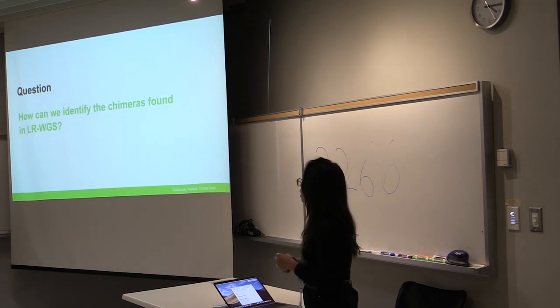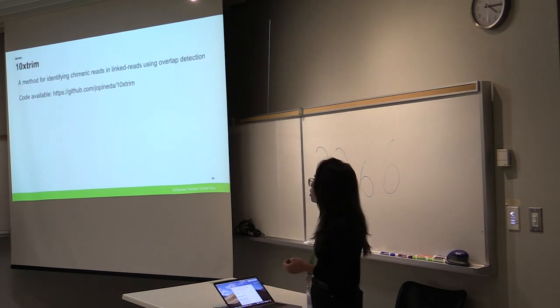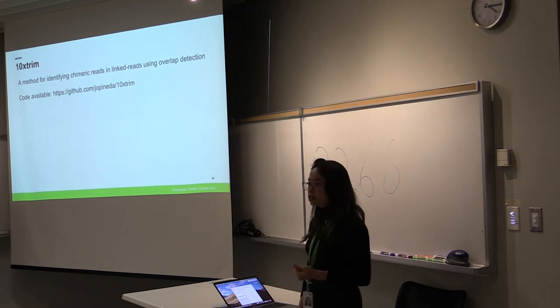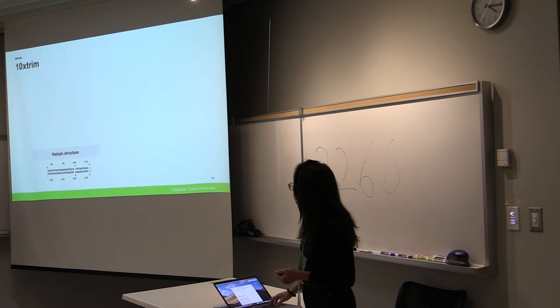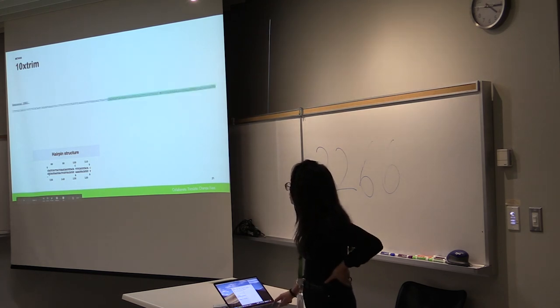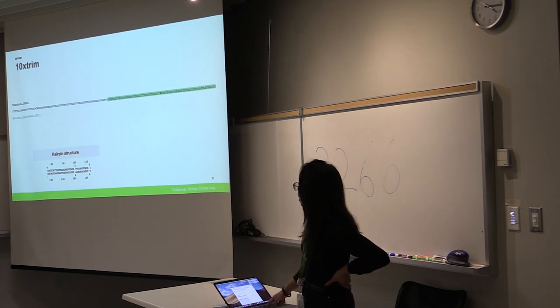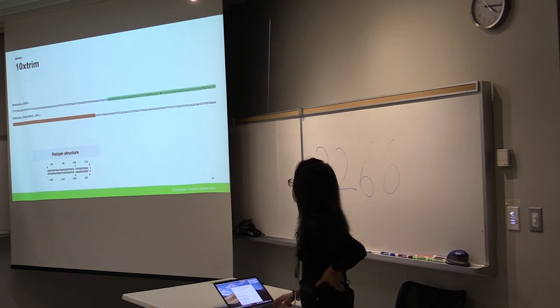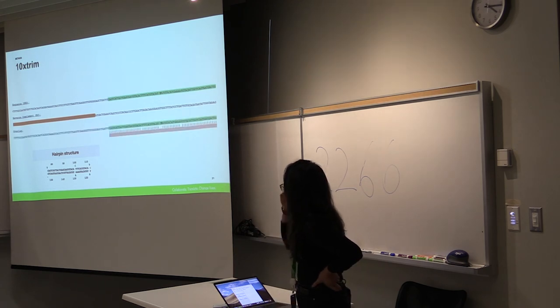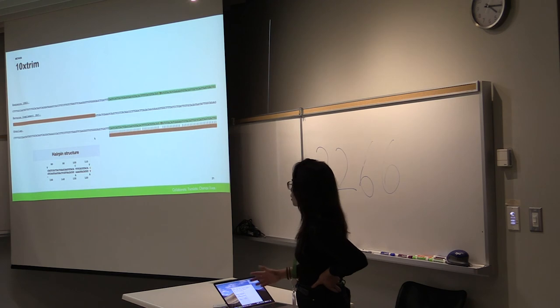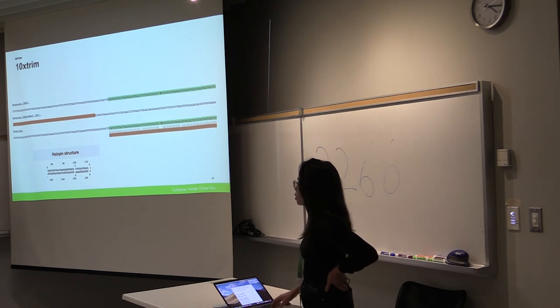And so we tried to investigate how we can find these chimeras. And we developed a novel tool called 10X Trim, which aims to identify these chimeric reads using overlap detection. And the code is available on GitHub. The main idea behind this is motivated by looking at these hairpin structures. And what we noticed was that the sequences seem to overlap with its reverse complement. And so what we do is we perform an overlap detection between the original sequence and its reverse complement. And we find that if the overlap is sufficient enough, 10X Trim is applied and tries to trim off the reads up until the overlap point, which seems to carry out these false positive mutations.